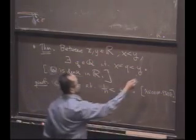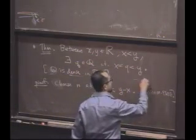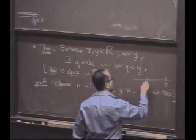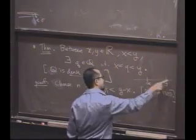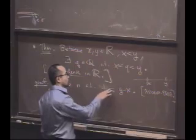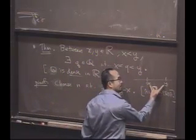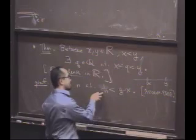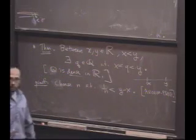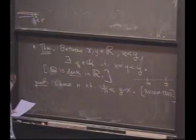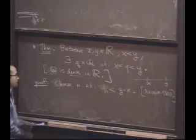So let me draw a picture, because this may help. Here's y, here's x. Look at their difference. Find a reciprocal who's smaller than that difference. And if you imagine these numbers being really close together, this number n might be really, really large.